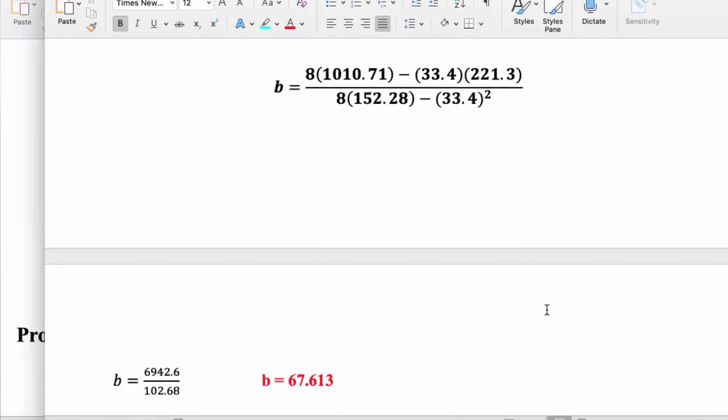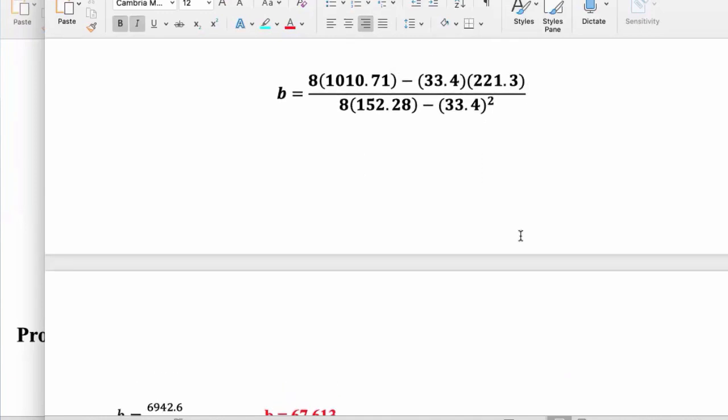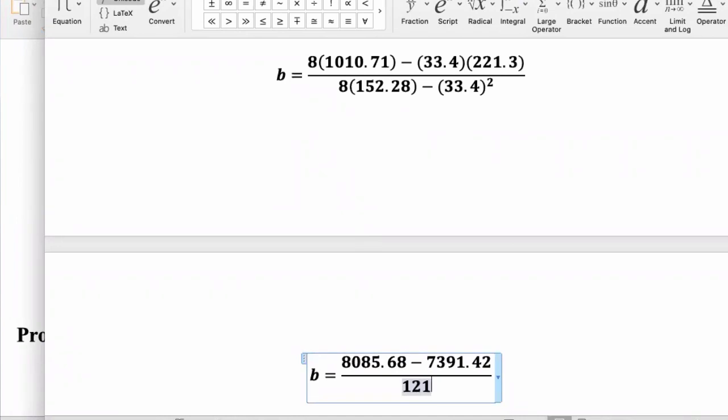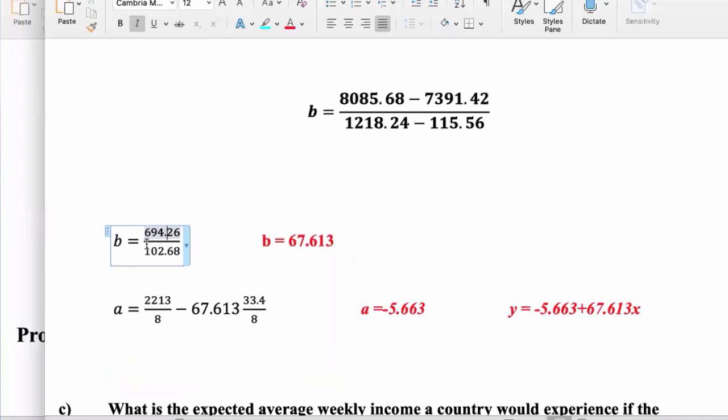And keep on breaking this down. Show your workings on the paper. Just don't throw your answer down as maybe I've done. I could have put in an extra couple of steps in here. So let's do those extra steps. So b is equal to 8085.68 minus 7391.42 divided by 1218.24 minus 1115.56. I'm going to divide that. So 8085.68 minus that right side of the formula, 7391.42, it's going to give us your 694.26. I see it there on the bottom left.